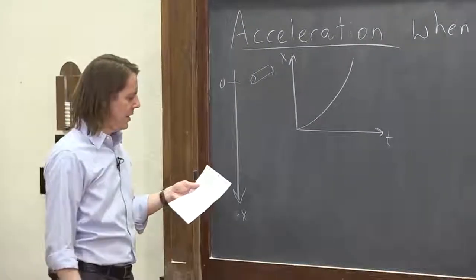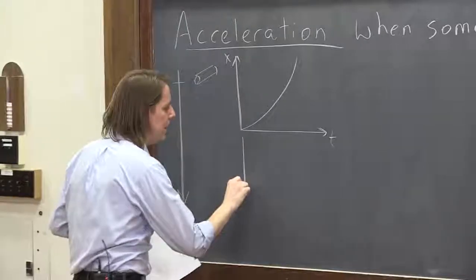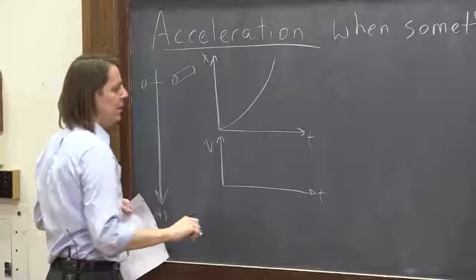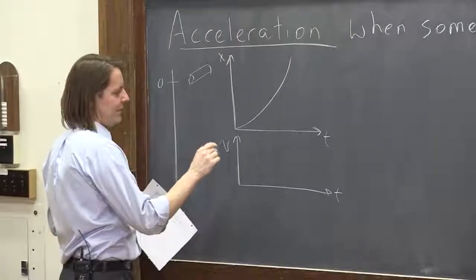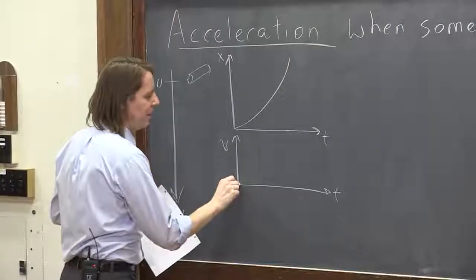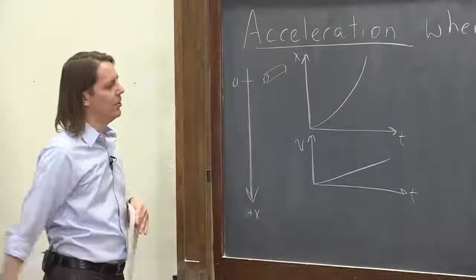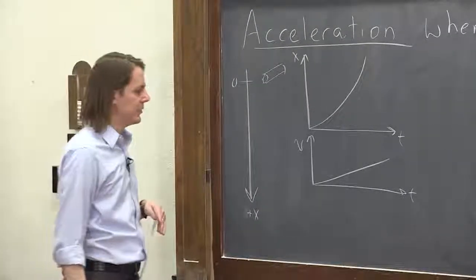If I were to plot v, the velocity versus time, what would it do? At the beginning, when I released it, it had no velocity, and then it would increase. The velocity increased as it fell. That's what it means to accelerate, in this case.